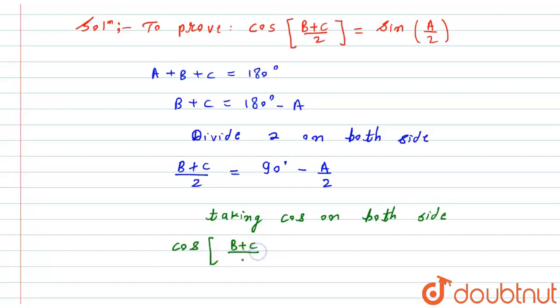This gives us cos((B+C)/2) = cos(90° - A/2).